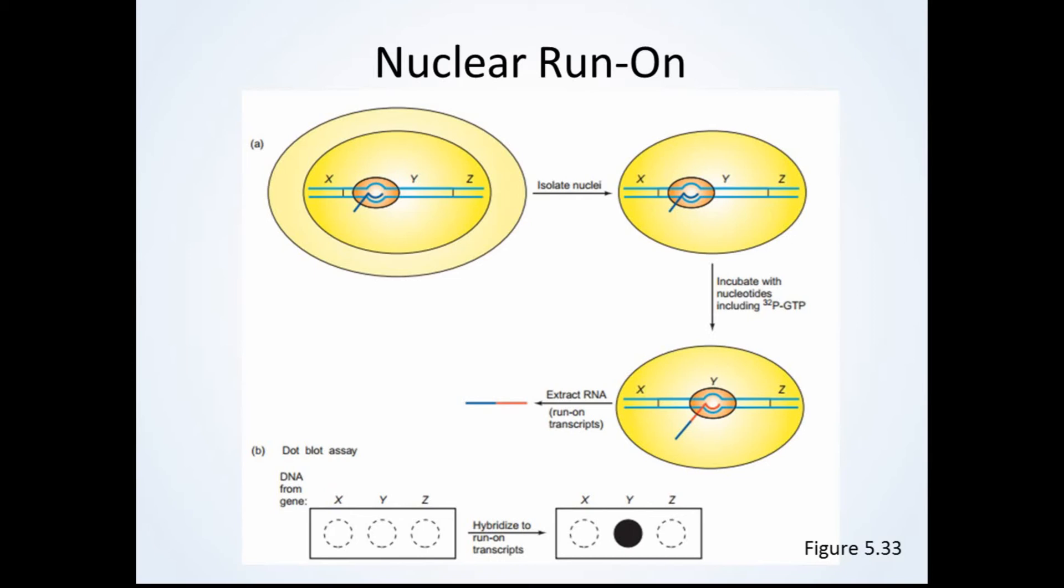Hybridization results in a labeled dot on the blot. In this figure, there is a dot in the section that contained the DNA for gene Y. This means that the transcript for gene Y was produced in the nuclear run-on experiment. Therefore, transcription of gene Y was occurring in the cell at the time of the experiment. However, there appears to be no hybridization to the DNA for genes X or Z, so they must not have been transcribed.